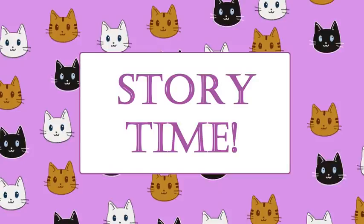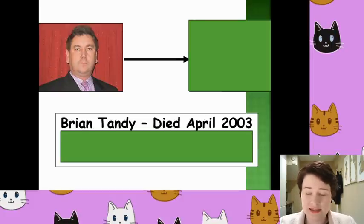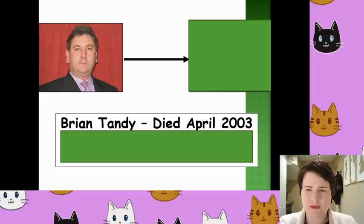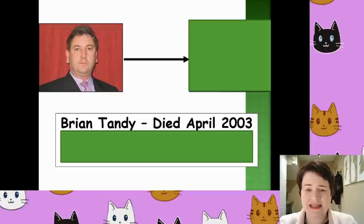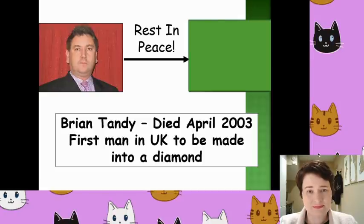Story time! So this story involves a guy called Brian Tandy. Brian Tandy was a guy in England and he was the first in England to have something slightly unusual done to him. It had already been done a few times in America and is a unique way of dealing with a person's remains when they pass away. Brian Tandy in 2003 was the first ever person in England to be made into a diamond. True story.